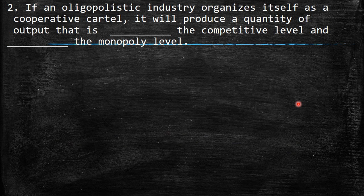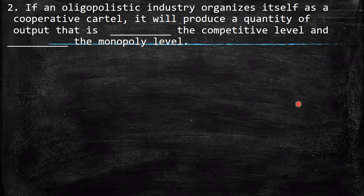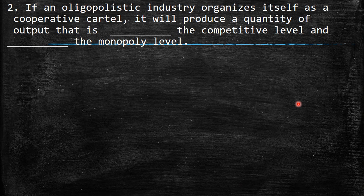The second question: if an oligopolistic industry organizes itself as a cooperative cartel, it will produce a quantity of output that is what relative to the competitive level and the monopoly level? Remember, a cartel is when a small number of firms control the majority of the market and make a commitment to produce an established quantity.